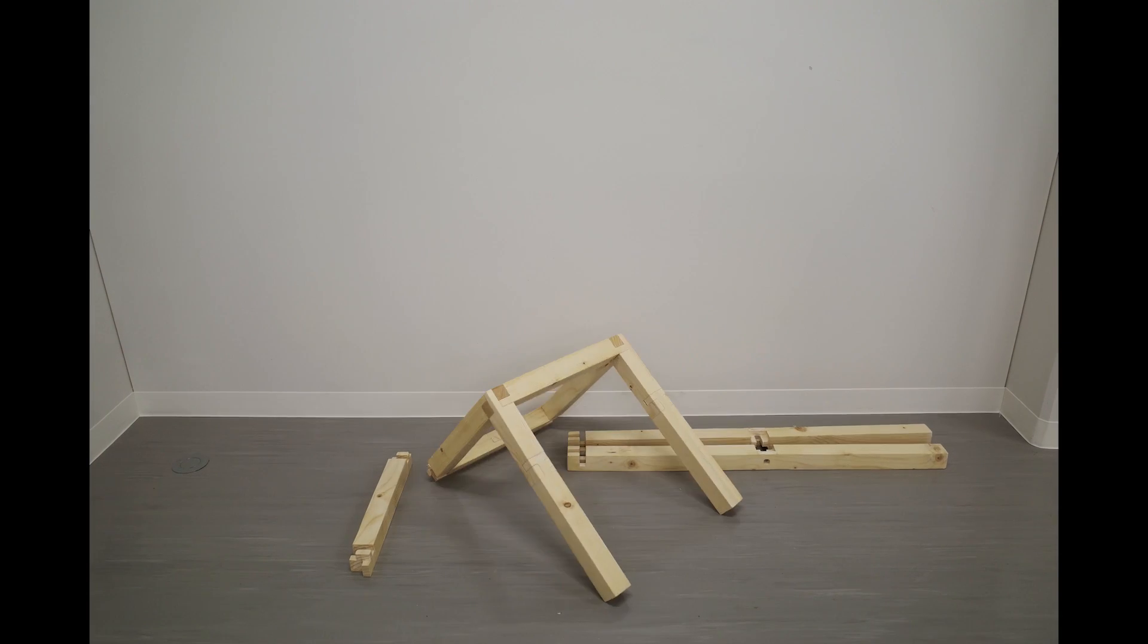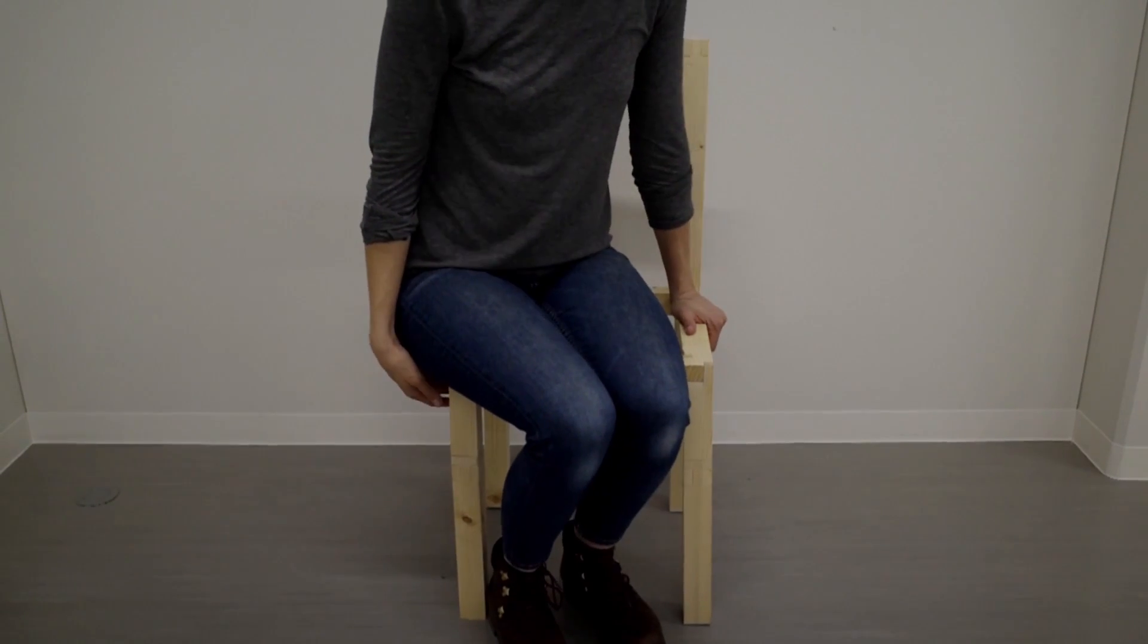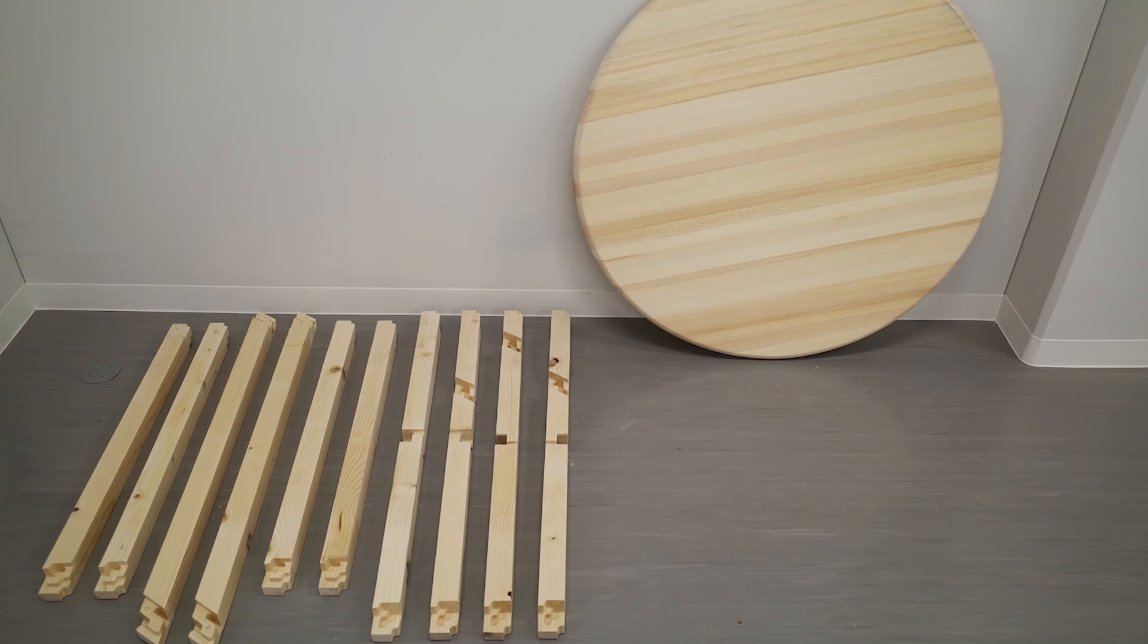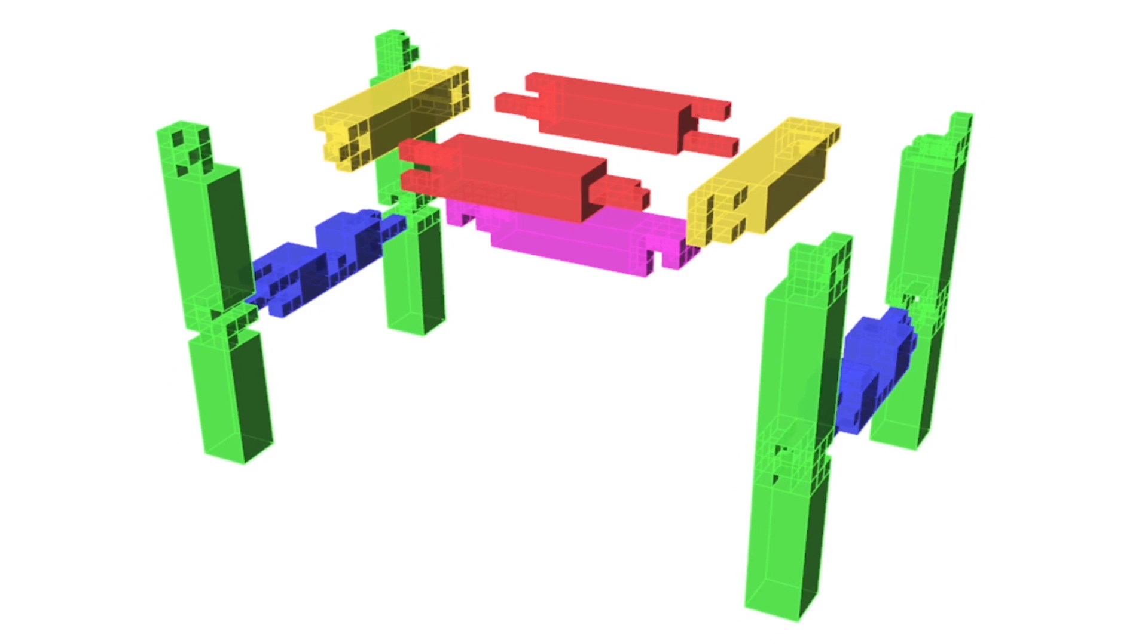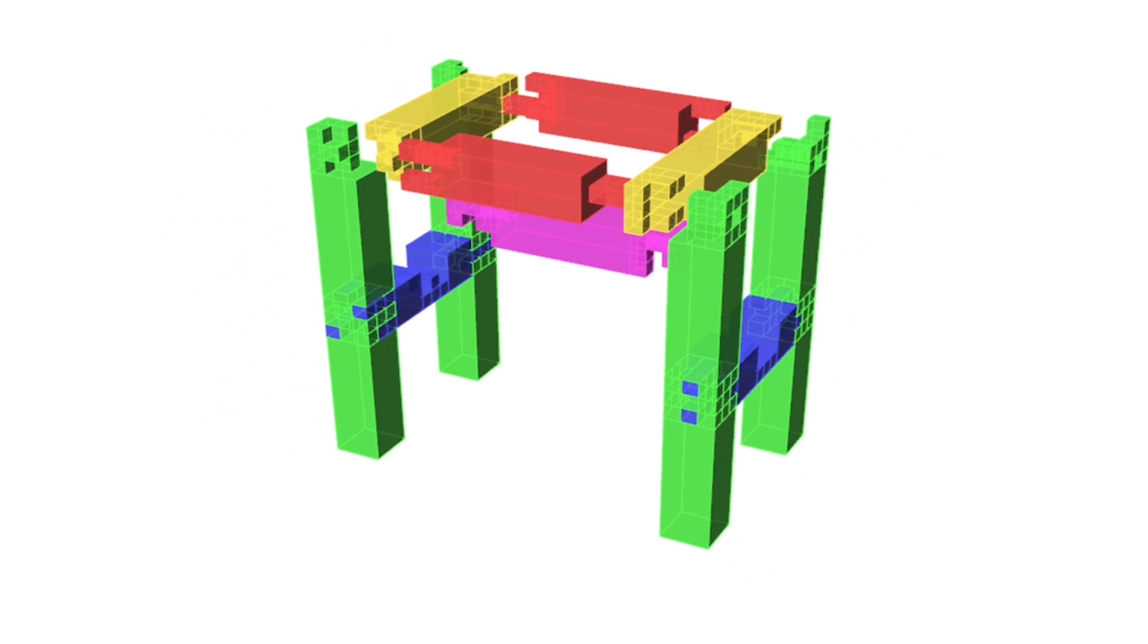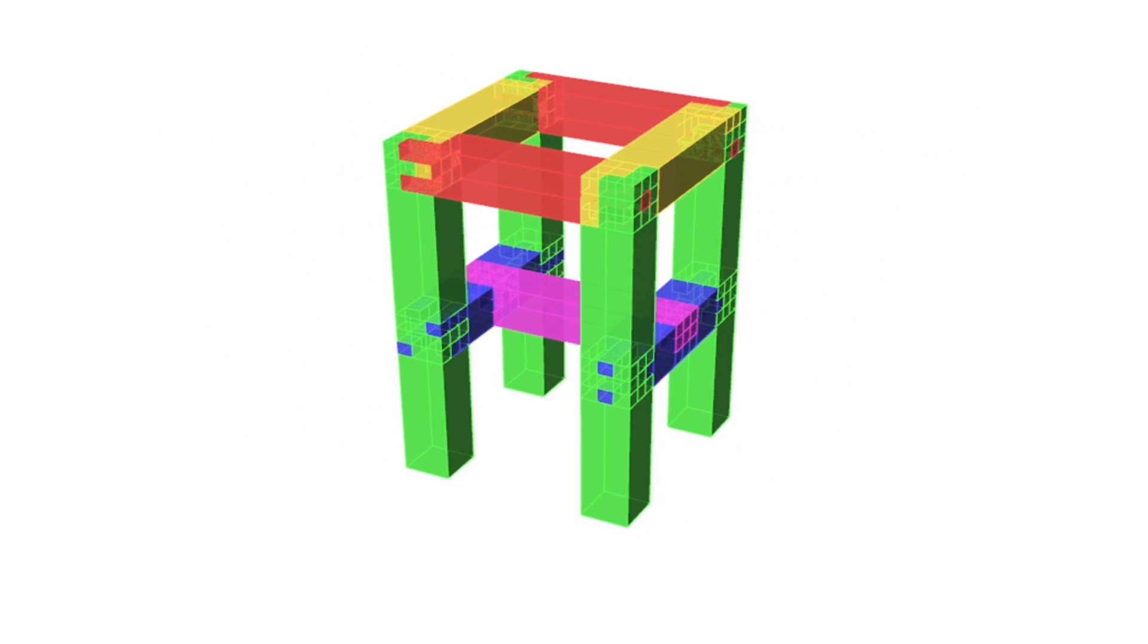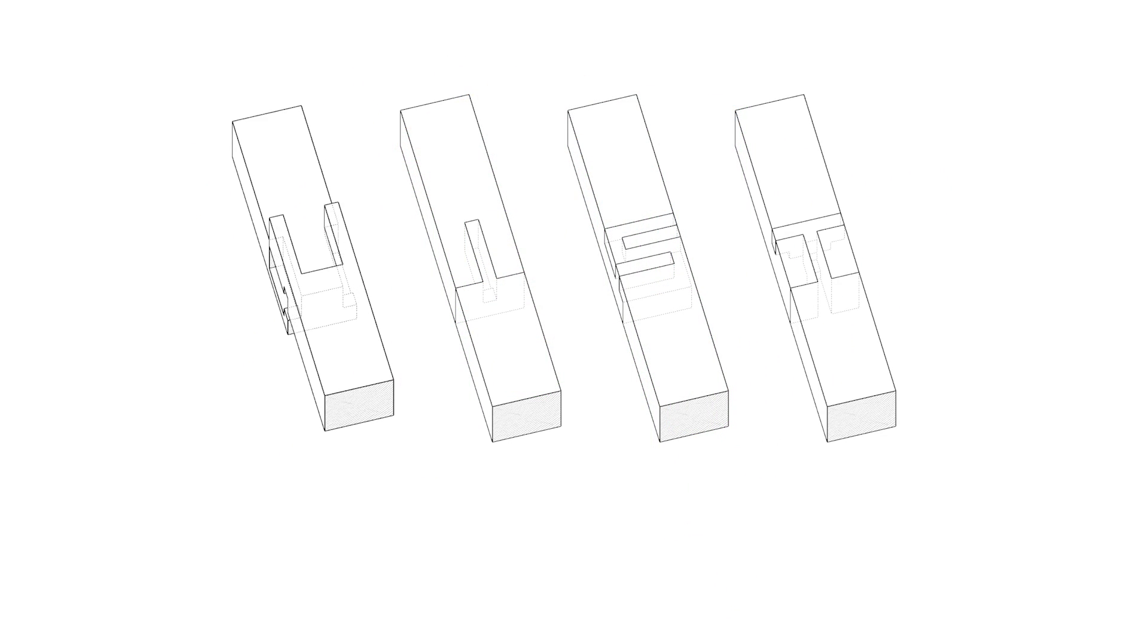Using Tsugite, we fabricated a real-sized chair that a person can sit on, and a sturdy table that has some non-orthogonal joints. We also designed an interlocking stool with all unique and non-symmetrical joints. Thank you for your attention.